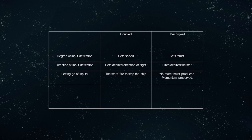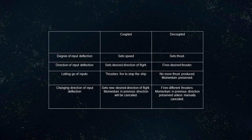Letting go of inputs in coupled mode causes thrusters to fire, which will stop the ship. In decoupled mode, letting go of inputs will result in no more thrust produced, but momentum will be preserved. When changing direction of input deflection in coupled mode, this will set a new desired direction of flight and momentum in the previous direction will be cancelled. In contrast, in decoupled mode, changing the direction of input deflection will fire different thrusters, but momentum in the previous direction will be preserved unless manually cancelled.